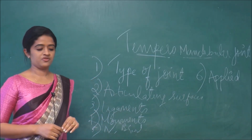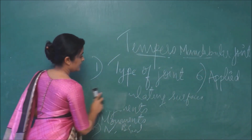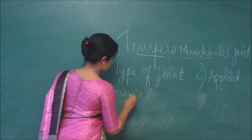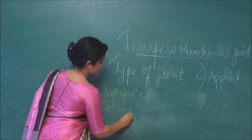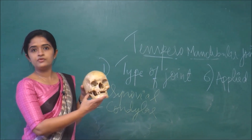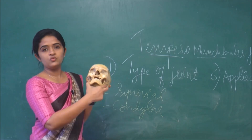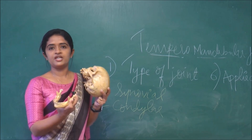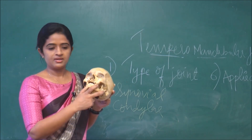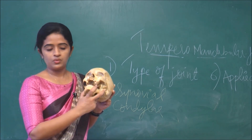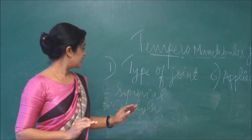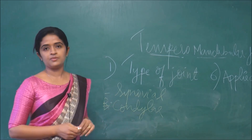The temporomandibular joint is a synovial joint, specifically classified as a condylar type. Although we have two joints — one on the right side and one on the left side — they act as a single entity. Because both condyles of the mandible act simultaneously, some books prefer to call it a bicondylar variety of synovial joint.